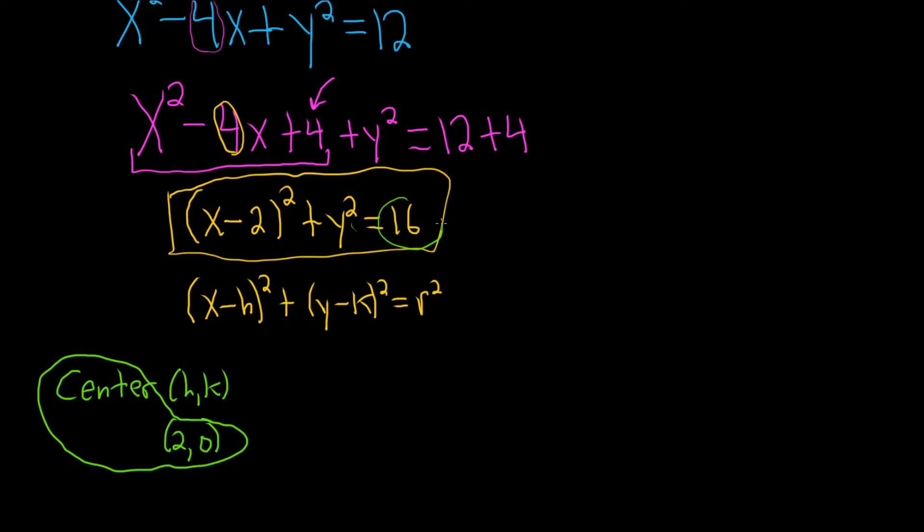As for the radius, you just take the square root of this number. So r is equal to the square root of 16. So r is equal to 4.